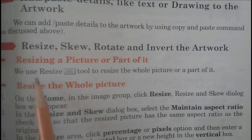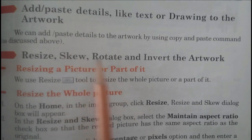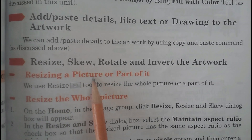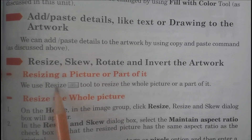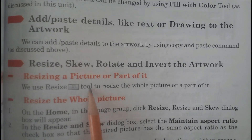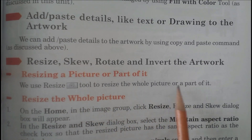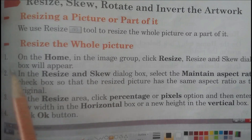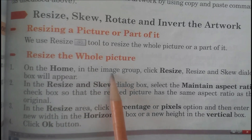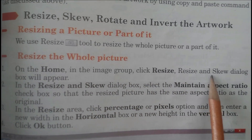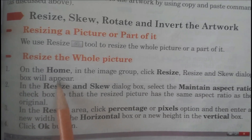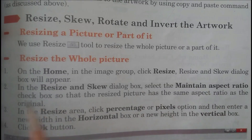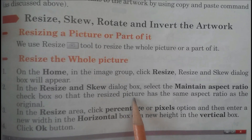Resize, skew, rotate, and invert the artwork. Number one is resizing a picture or part of it. We use the double square icon tool to resize the whole picture or part of it. Step one: on the Home tab, in the Image group, click Resize. The Resize and Skew dialog box will appear. Step two: in the Resize and Skew dialog box, select the Maintain Aspect Ratio check box so that the resized picture has the same aspect ratio as the original.